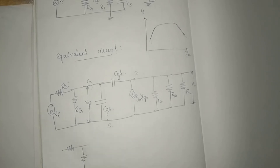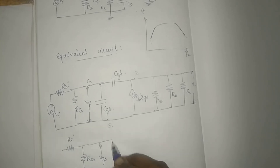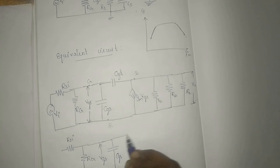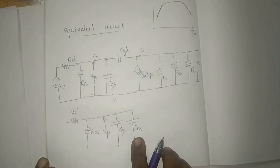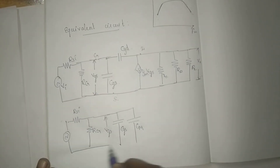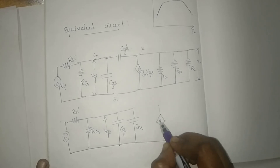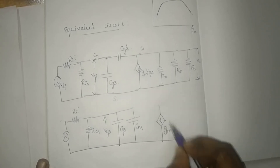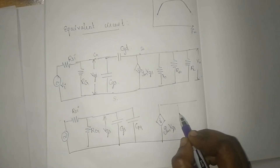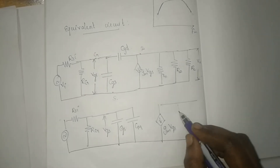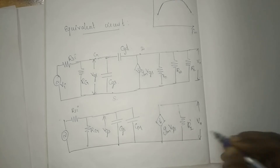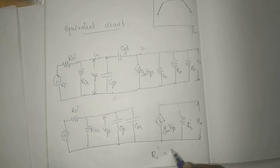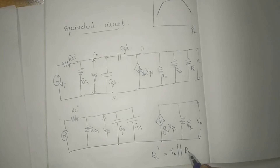In the equivalent circuit we have RSI, RG, VGS voltage, CGS capacitance, and the Miller capacitance CM. The output load resistance RL' is equal to R0 in parallel with RD in parallel with RL. The output voltage is V0.